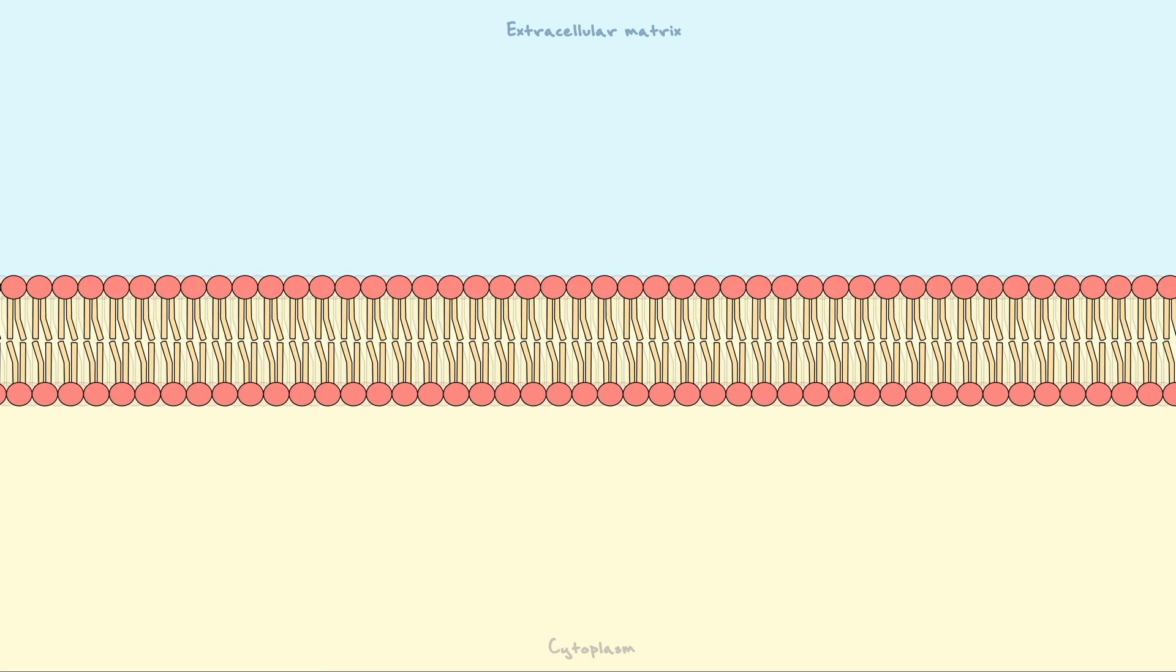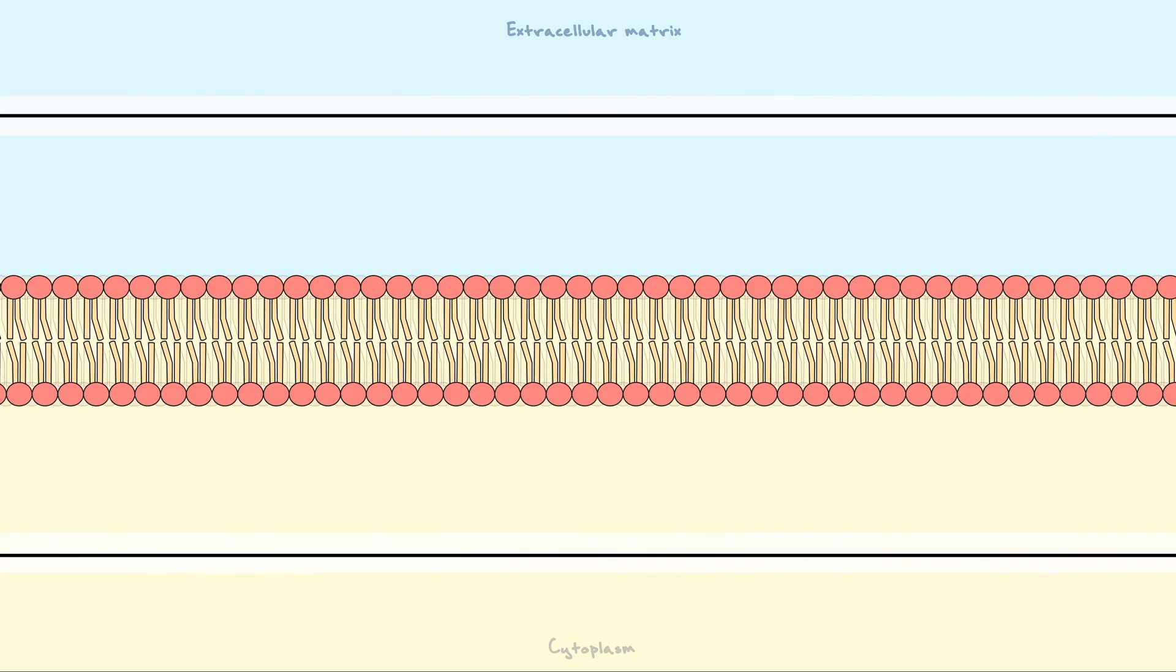The model we are about to begin describing is from cable theory. Here again, we can consider the extracellular matrix and the cytoplasm as two conductors. Contrarily to the equivalent circuit model, we need to indicate on the intracellular side the axial resistance.